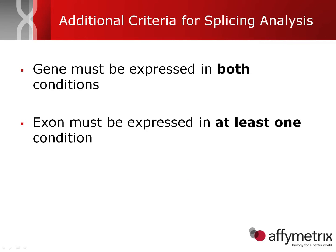There are additional criteria that must be applied before proceeding. First, the gene must be expressed in both conditions — because if you go from off to on, you won't be able to tease out any splice variant or exon splicing event changes. Second, the exon must be expressed in at least one of the conditions, because otherwise you're just looking at noise from signal estimates bouncing up and down, which could yield biologically irrelevant differences.